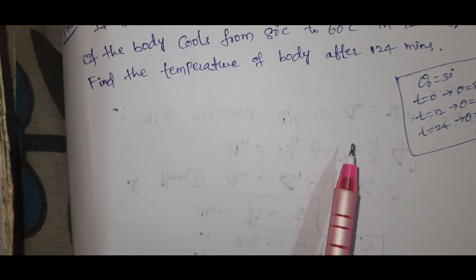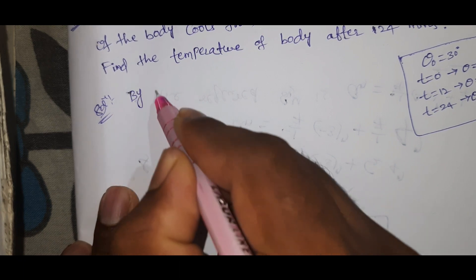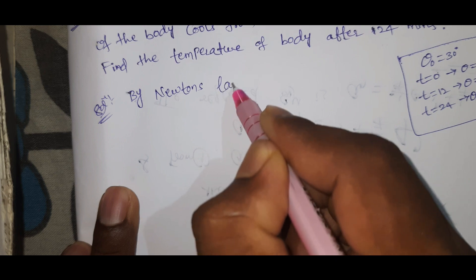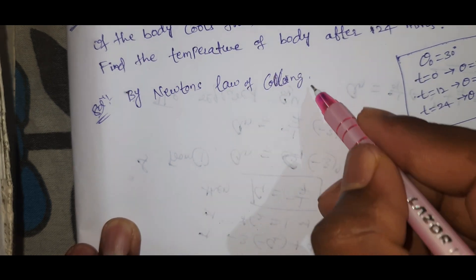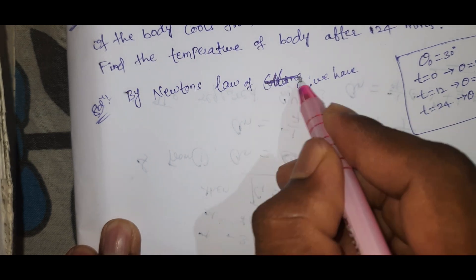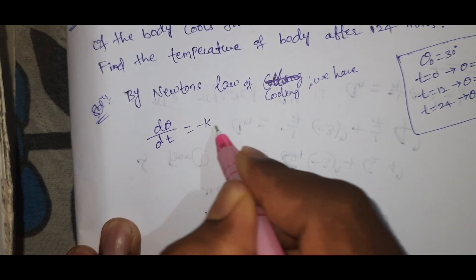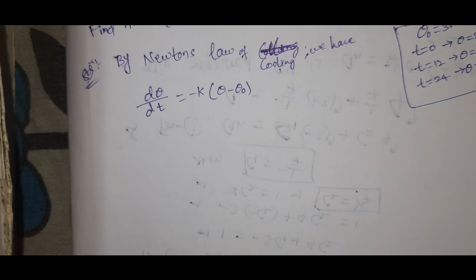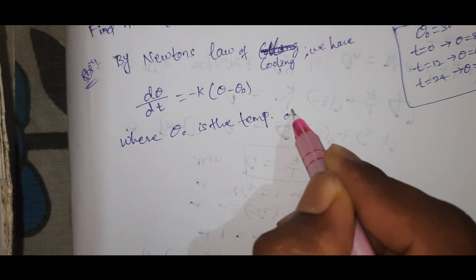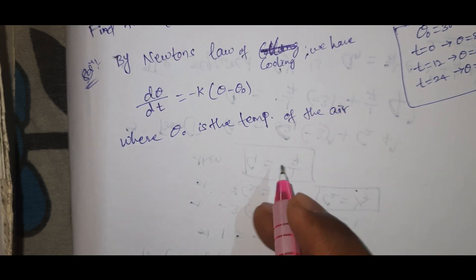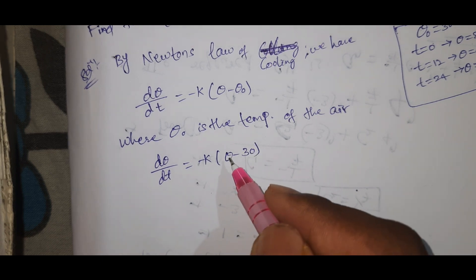Solution by Newton's law of cooling. We have d theta by dt equal to minus k into theta minus theta naught, where theta naught is the temperature of the air. So d theta by dt equal to minus k into theta minus 30 degrees. This is equation number one.